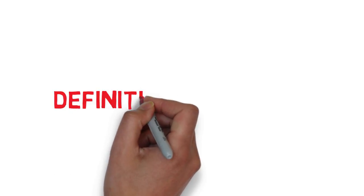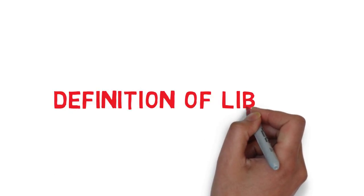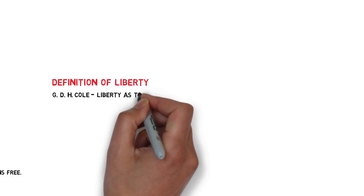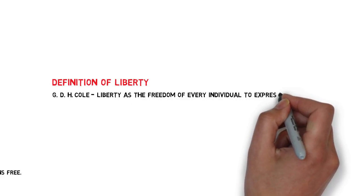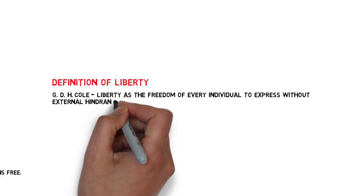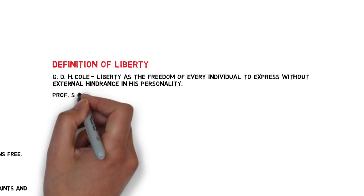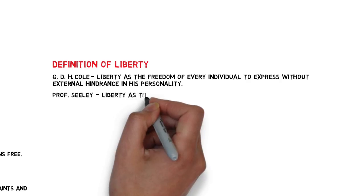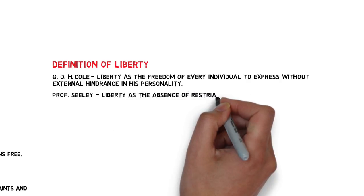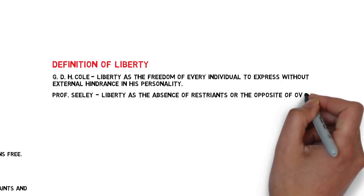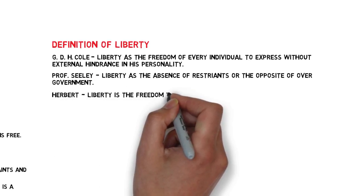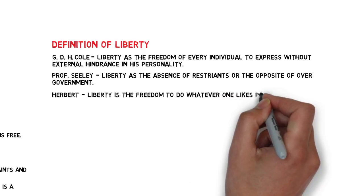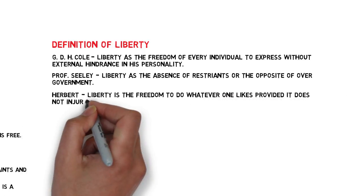Let us discuss the definitions of liberty. According to G.D.H. Cole, liberty is the freedom of every individual to express without external hindrance his personality. According to Professor Seeley, liberty is the absence of restraint, or the opposite of over-government. According to Hubbard, liberty is the freedom to do whatever one likes, provided it does not injure the feelings of others.